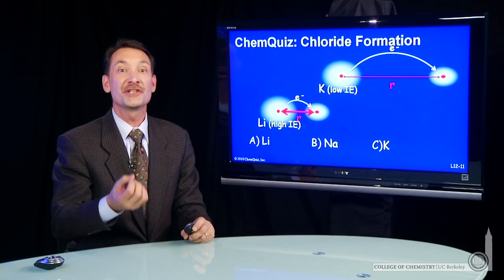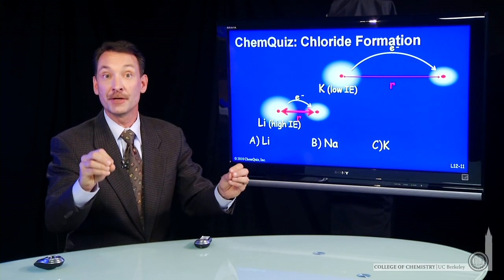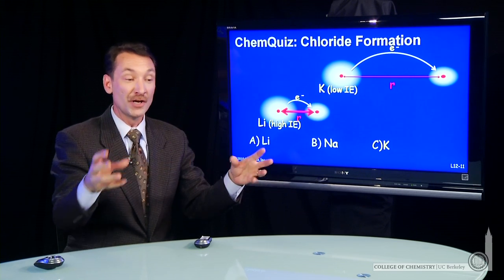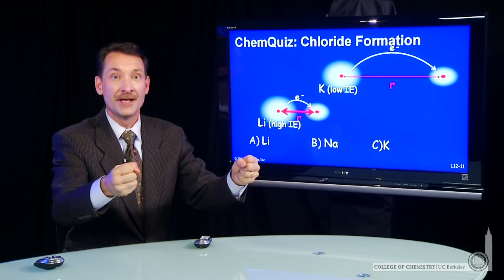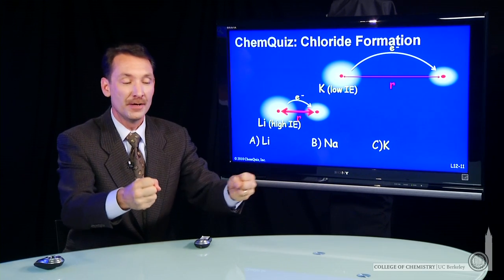We're looking at the formation of chlorides, and we're trying to decide when the electron jumps from either sodium, potassium, or lithium onto the chlorine. Well, we know when it does, there'll be an ionic bond formation. So we're balancing two things. We get a bunch of energy out when we form the ionic bond,